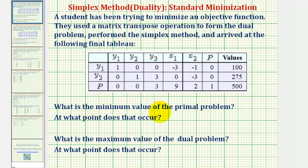We want to determine what the minimum value of the primal problem would be and at what point that occurs, as well as what the maximum value of the dual problem would be and at what point that occurs.